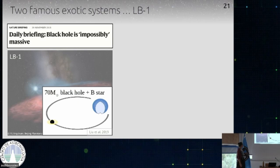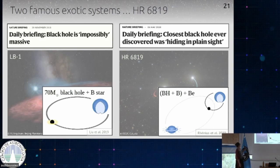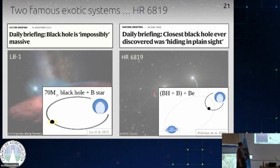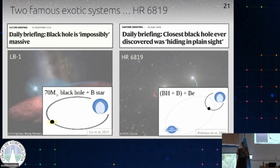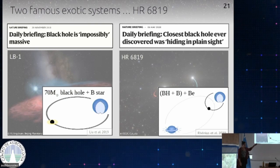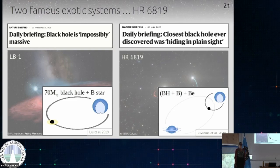The second system was also in the news — it was proposed to be the closest black hole ever discovered. That system, HR 6019, was initially proposed to be a triple system — a B-star and a black hole as the inner pair, and then a BE star as a third companion further out — making it into the news because it's close enough to Earth to see with the naked eye in the southern hemisphere. If there was a black hole, statistically there should be many more black holes in our galaxy than we thought.